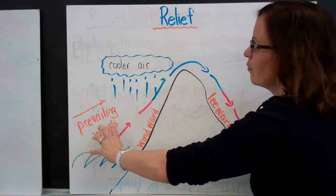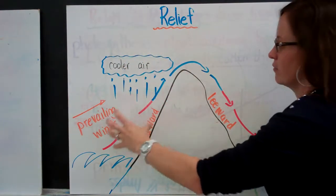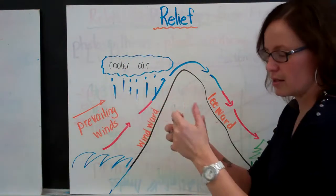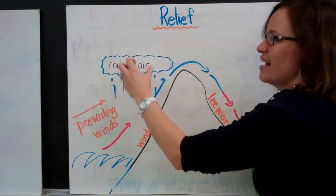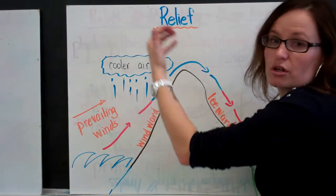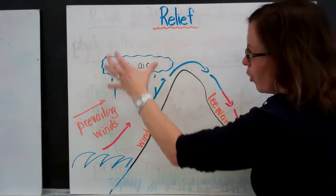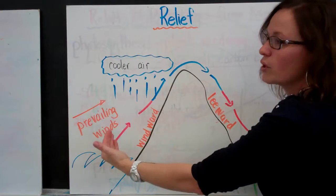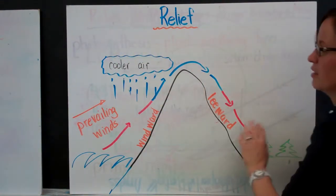So as that moist, warm air starts to move up the windward side of the mountain, it begins to cool because the particles are spreading apart. And as it cools, it can't contain its heat and precipitation. It results in condensation and precipitation. So we have more rain, more precipitation on the windward side of the mountain than we do on the leeward side or the continent side of the mountain.